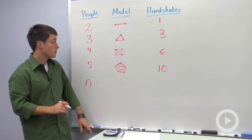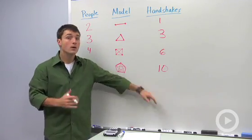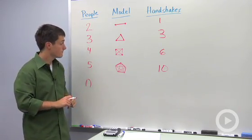So a couple ways that you could do this. You could say, oh, well these are the triangular numbers, so I know the formula. Or you could say, well, looking at my model, how can I come up with the number of handshakes?